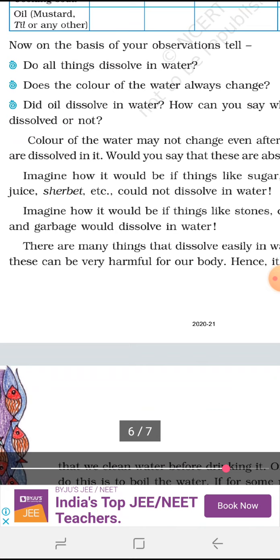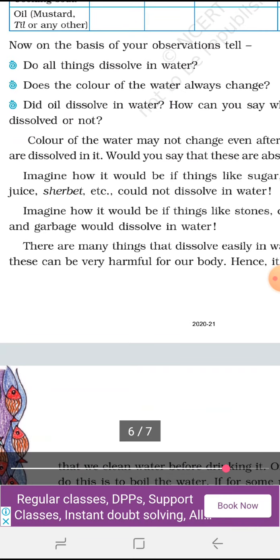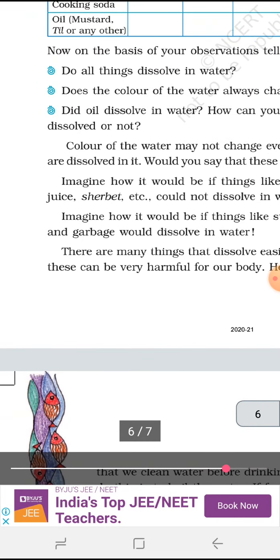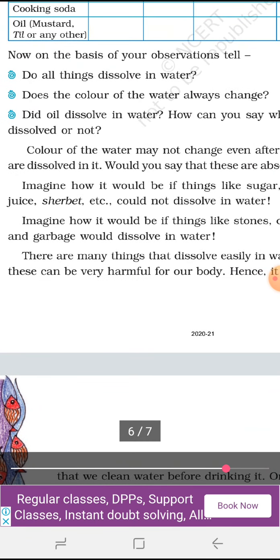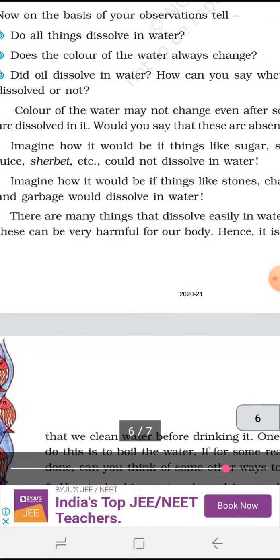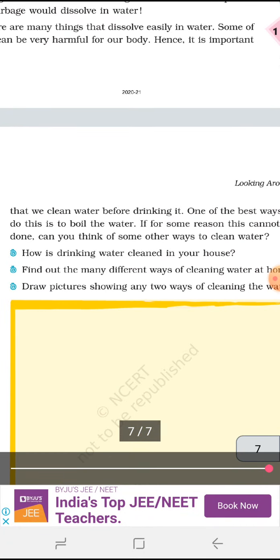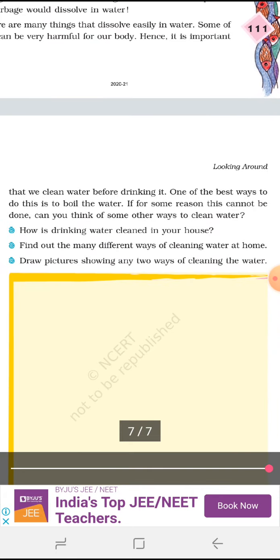If it happens, if it doesn't dissolve, sugar, it doesn't dissolve, lemon juice, then how do we drink sherbet? We were quite far away with this sweet dissolving watery things, these juices. Imagine how we would think. Like stones, chalk, plastic and garbage would dissolve in water. Oh my God. If they dissolve in water, what will happen? There are many things that dissolve easily in water. Some of these can be very harmful for our body. Hence, it is important that we clean water before drinking it.